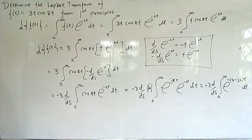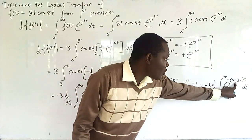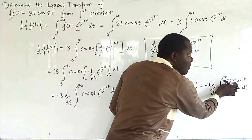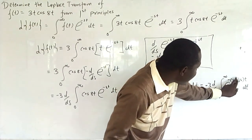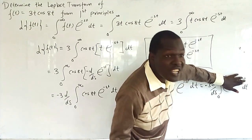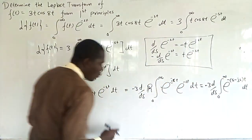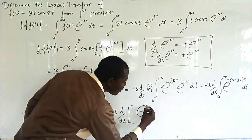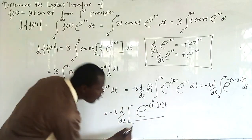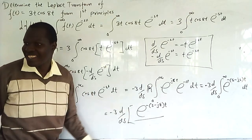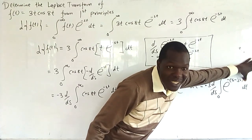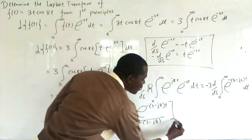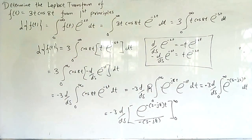Ladies and gentlemen, integrating that is one touch, because the derivative of the inner function -(s - j8) is a constant when integrating with respect to t. So when we integrate e^(-(s-j8)t), it remains as an exponential divided by that constant -(s - j8), evaluated from 0 to infinity.